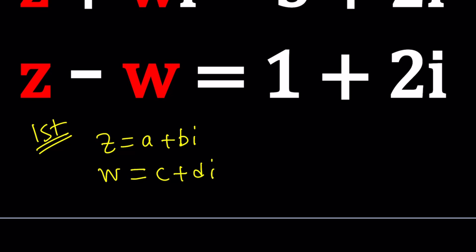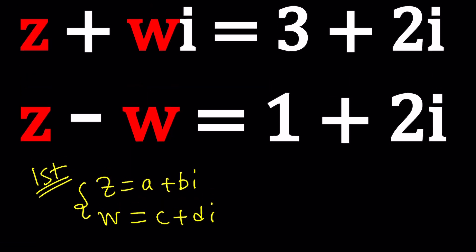And W with c plus di. Obviously, I have to use something else so I couldn't use a plus bi. Then I would be assuming that they're equal but they're not, right? Or they may not be.